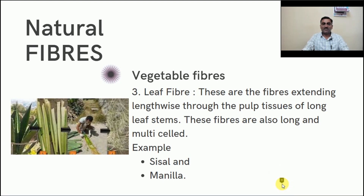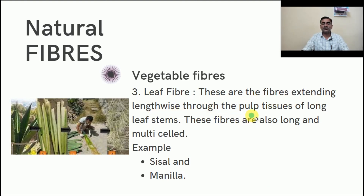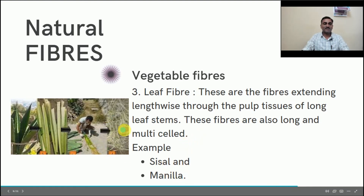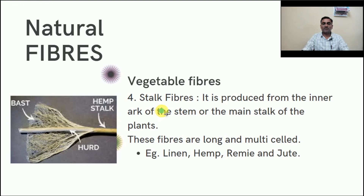The second type of natural fiber is bast fiber. These are fibers extending lengthwise through the pulp tissues of mixed cells. These fibers are long and multi-celled, such as sisal and vanilla fiber. Here we can see sisal fiber, which is obtained from the leaf of the sisal plant. The fourth type is stalk fiber, produced from the inner bark of the stalk or main stem of the plant. These fibers are long and multi-celled. Examples include ramie, hemp, and jute, which are natural stalk fibers. Here we can see hemp fiber — this part is the herd and this one is the bast, obtained from the stalk of the hemp plant.